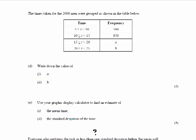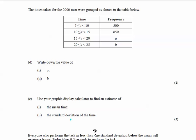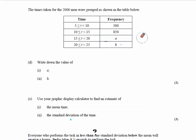Now we have a frequency table — not cumulative frequency — with intervals 5–10, 10–15, 15–20, and 20–25. We need to find the missing values A and B. Remember, cumulative frequency is a running total, so you plot each point at the end of the interval using the running total. The first point would be plotted at t=10 with cumulative frequency 500, and the second at t=15 with cumulative frequency 500 plus the next frequency.